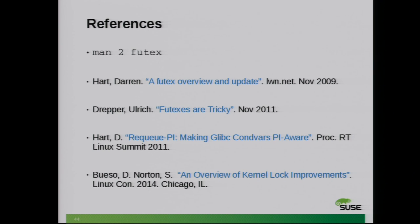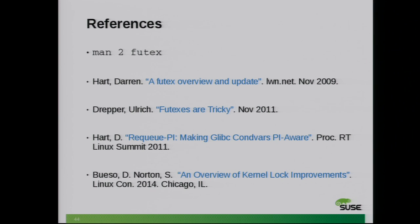Of course, looking at the code is obviously the best way to go. Some other traditional references: the first is the Futex overview and update, which talks a lot about different performance work going on in the kernel. Uli's Futexes are Tricky — it's pretty much obligatory if you're doing user-space stuff. PI requeuing, ULIP conditional variables — that talks a lot in another document. And finally, the experiments showing performance factors on larger machines versus smaller machines with the same workload.